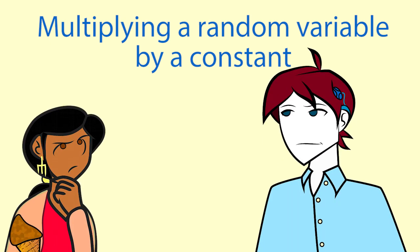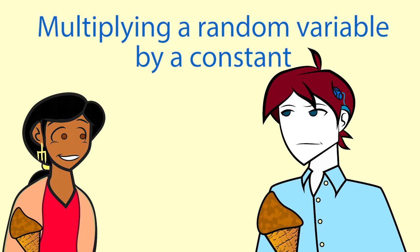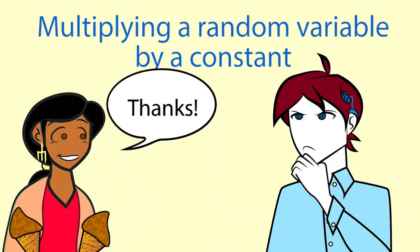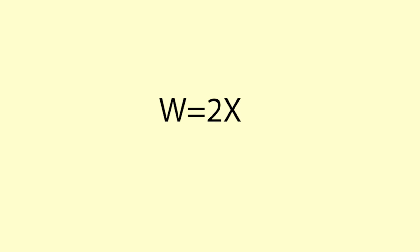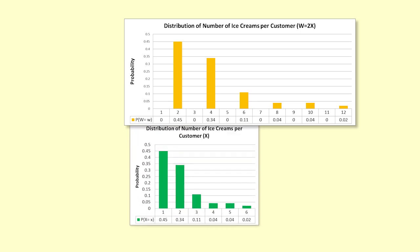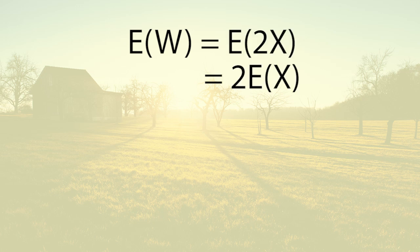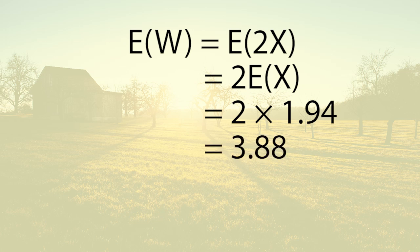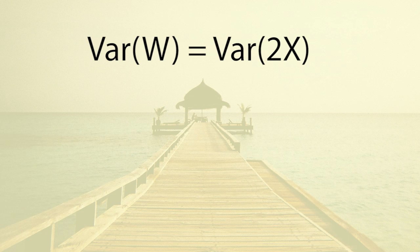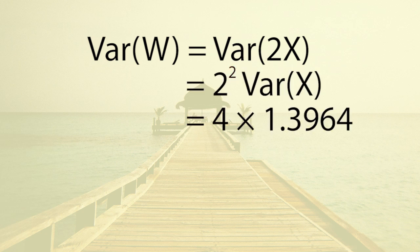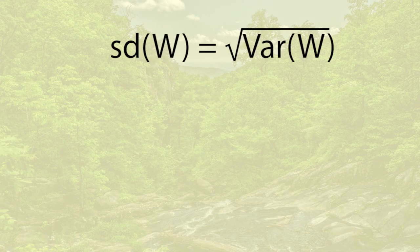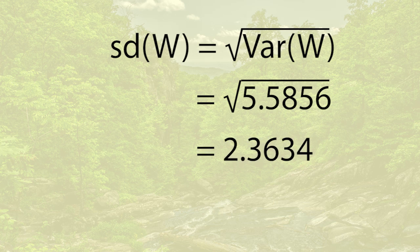Sometimes we want to multiply a random variable by a constant value. Say Luke has one customer left but decides to give away one free ice cream with each ice cream. In other words, he is going to double each order. What is the distribution for the number of ice creams now, assuming that the customer doesn't change his or her order? We define w as 2x. Here is the distribution. Note that all we have done is multiply each of the values of x by 2. The expected value of w is the expected value of 2x, which is 2 times the expected value of x equals 2 times 1.94 equals 3.88. The variance of w is the variance of 2x, which is 2 squared times the variance of x equals 4 times 1.3964 equals 5.5856. The standard deviation of w equals square root of variance of w equals square root of 5.5856 equals 2.3634.